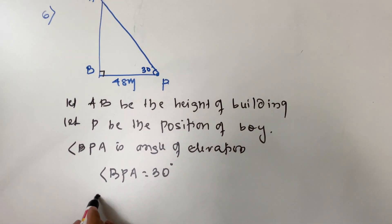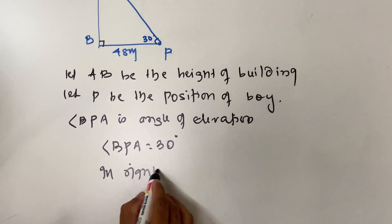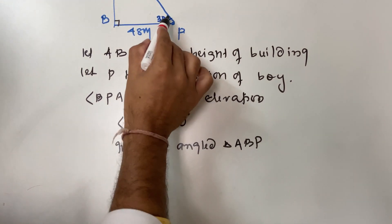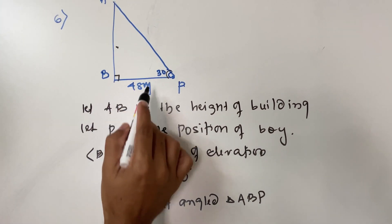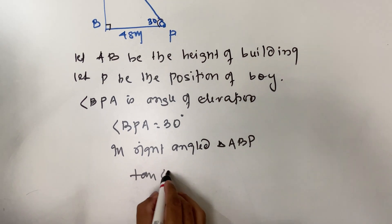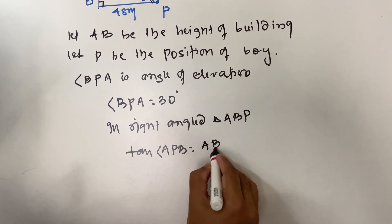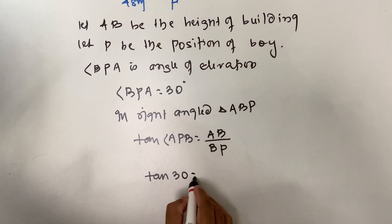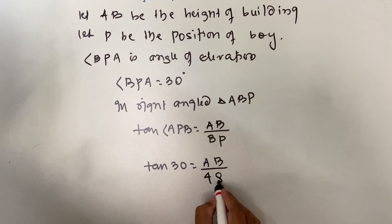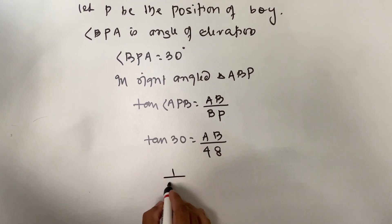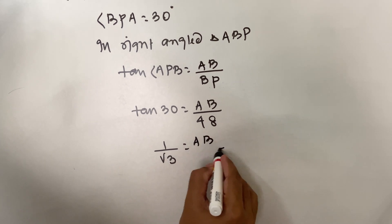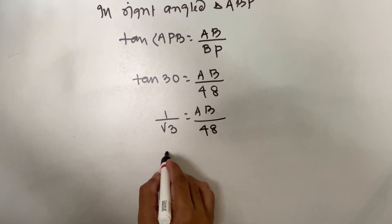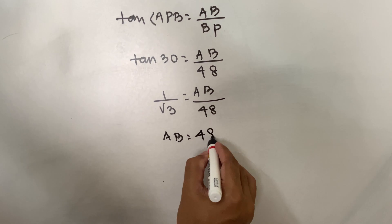We go with right angle triangle ABP. AB is the opposite side, so we use tan: tan(angle APB) = opposite side upon adjacent side. Tan 30 = AB upon BP, and BP is equal to 48. Tan 30 is 1 upon root 3. So AB equals 48 upon root 3. Do your cross multiplication.